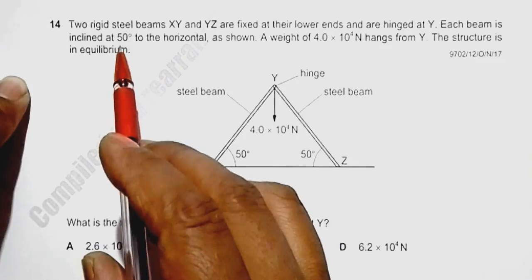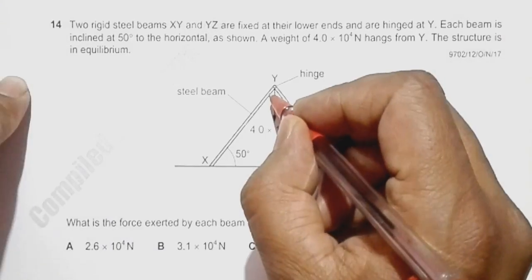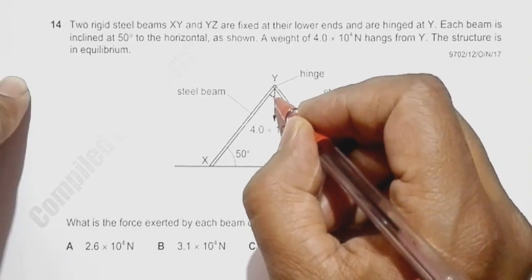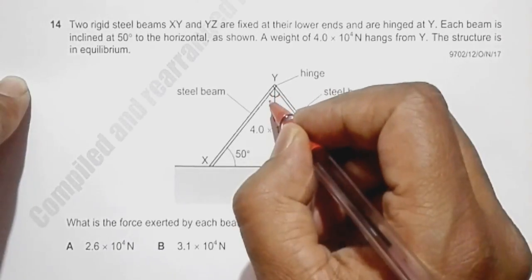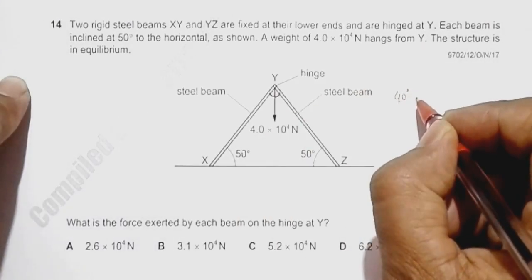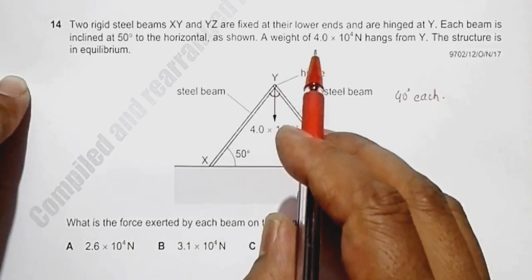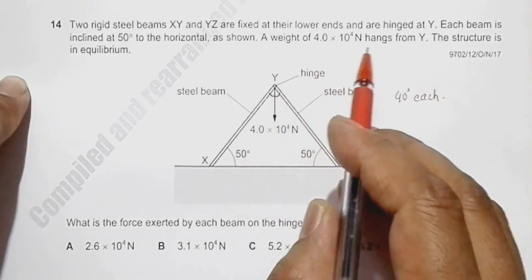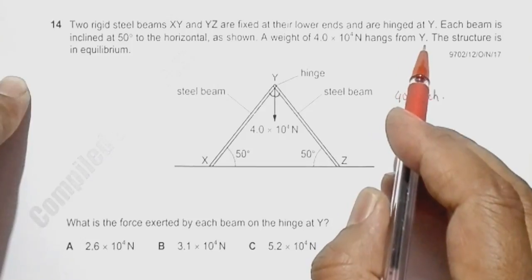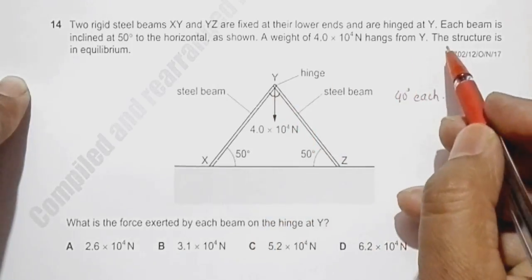Each beam is inclined at an angle of 50 degrees to the horizontal, so that means the angle with the vertical should be 40 degrees each. A weight of 4 × 10^4 Newton hangs from Y.